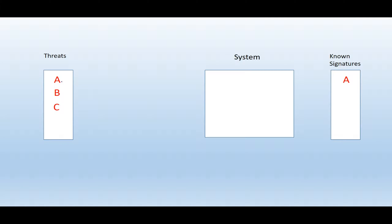So let's say an attacker uses threat A again. Threat A will enter the system and the system will again compare it with previously known signatures. This time A will be compared with A, and the system will realize that this is something we have seen before, so it will quarantine it because it knows this is malicious code, and now this threat will not be able to execute its code.